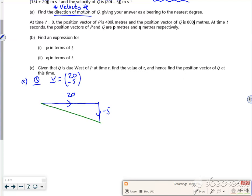So I've got something which goes across 20 and goes down 5. So what do I want then? I don't want the magnitude of it, I just want the direction. So there's theta and there's north. So tan theta is 5 over 20. Theta is the inverse tan of a quarter. So theta is roughly 14 degrees.